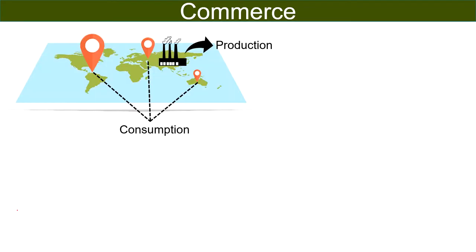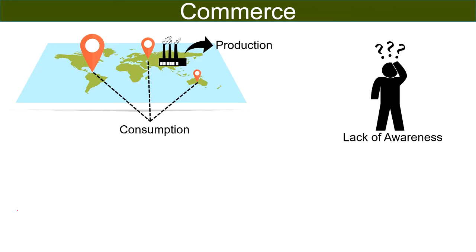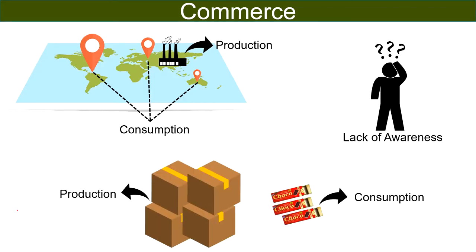Before understanding what is commerce, first of all we will understand what is the need of commerce. As we all know, production of goods takes place at a particular location but consumers are spread all over the geographical area, and goods are of no use if they do not reach the final consumer. Moreover, consumers lack awareness about what kind of goods are produced by the manufacturer. In addition, production takes place in large quantities but consumers demand goods in small quantities. So all of these issues are resolved by commerce.